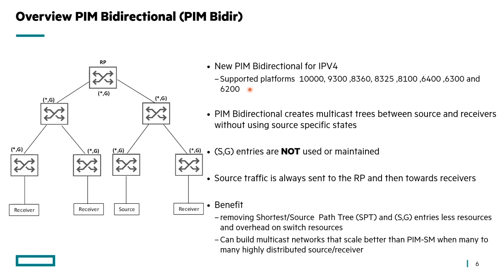So what is PIM bidirectional? Basically, PIM bidirectional creates multicast trees between our sources and receivers without having specific source states. What does that really mean? It means that we no longer have S,G entries — they are not maintained within the system. As you can see in the diagram, there are only star,G entries and no S,G entries.